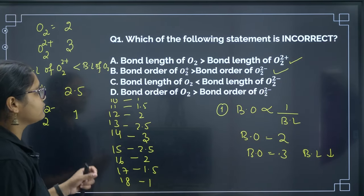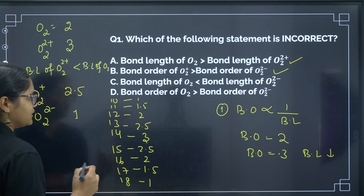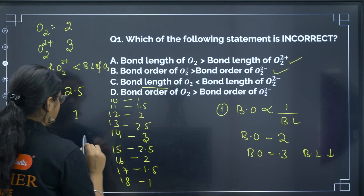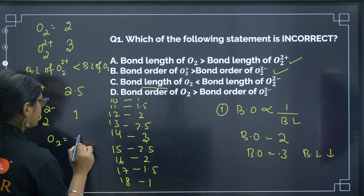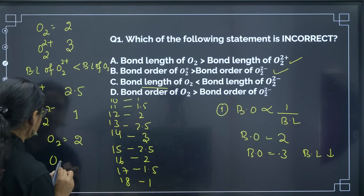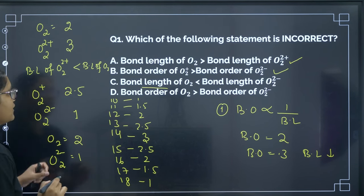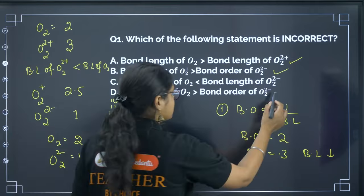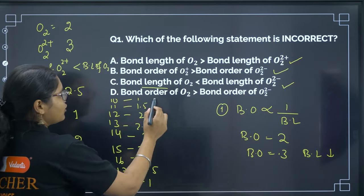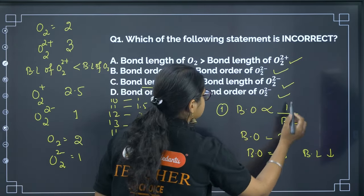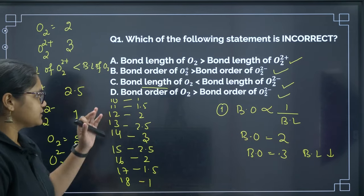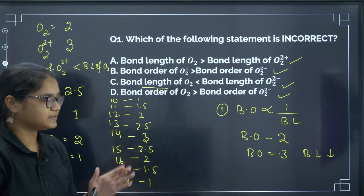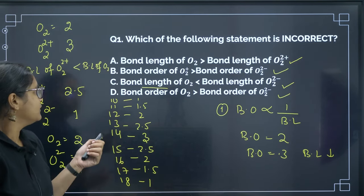Bond length of O2 is greater than bond length of O2²⁻ — wait, O2 has bond order 2 and O2²⁻ has bond order 1, so bond length of O2 is actually less. The given statement is correct here too. Bond order of O2 (2) is greater than bond order of O2²⁻ (1) — also correct. So all given statements are correct; perhaps one option is mismatched. This is the trick to find bond order. Next question.